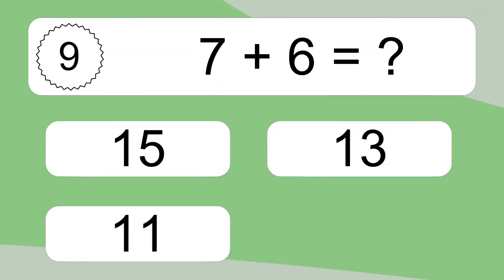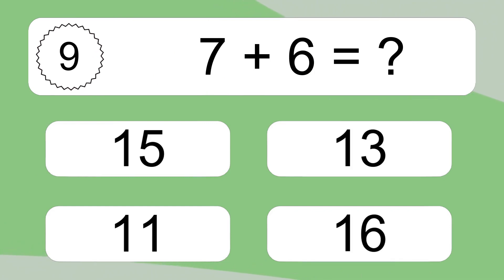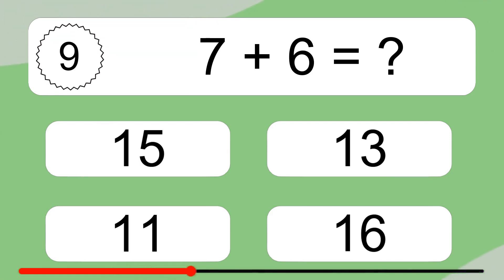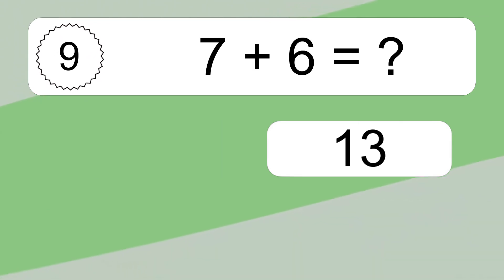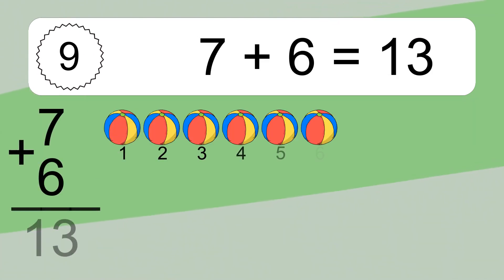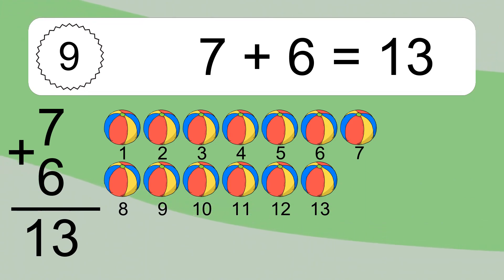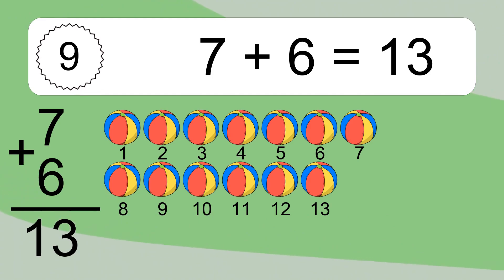7 plus 6 equals what? 7 plus 6 equals 13. Let's count it: 1, 2, 3, 4, 5, 6, 7, 8, 9, 10, 11, 12, 13.